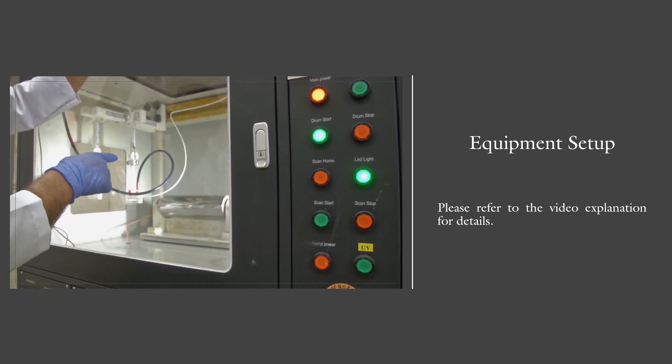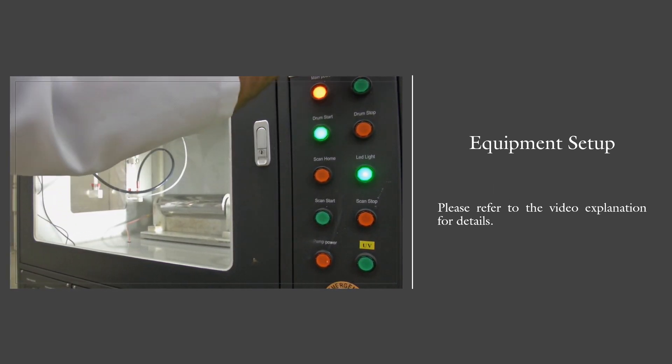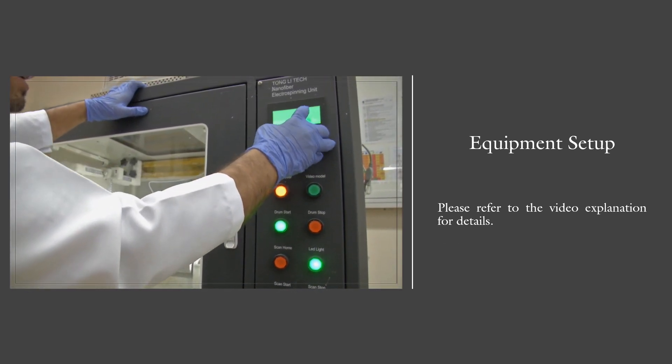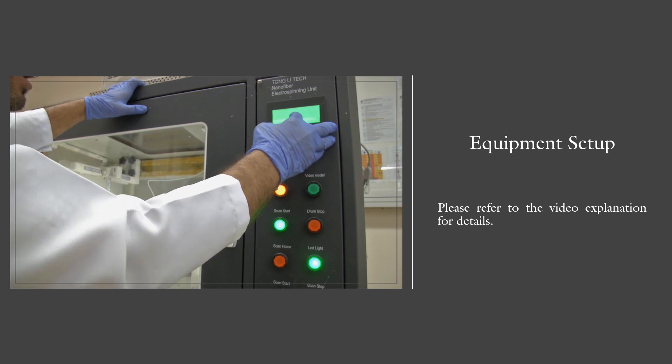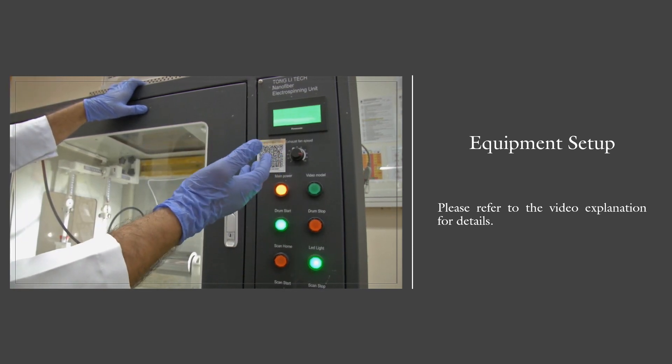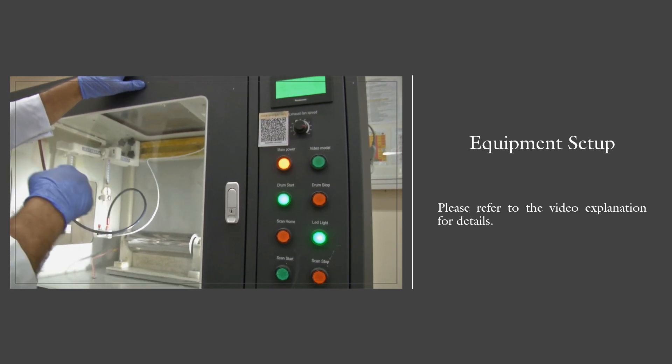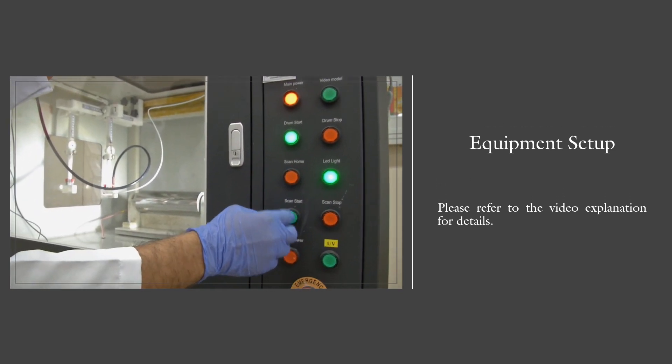We can set the speed of this drum using the settings here. Just click on the settings, and then you can control the speed of the drum up to 3000 RPM. We can also control the feed rate and the deposition of the fibers.